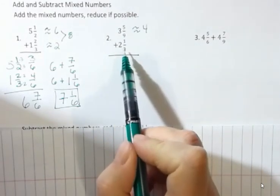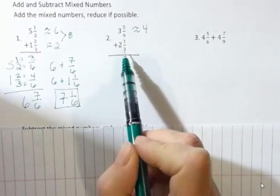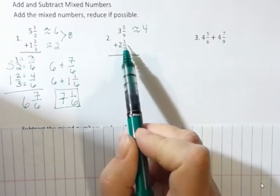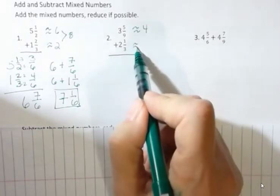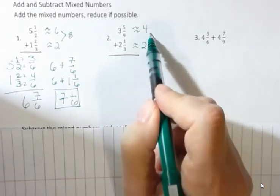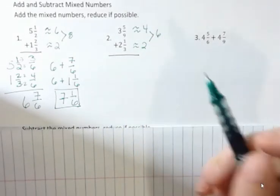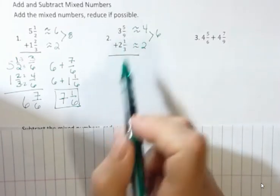What about two and one third? Well, one third is less than a half because half of three would be one and a half. We only have one, so that's less than a half. So we would round that down to two. And then if we added those together our approximation would be six.